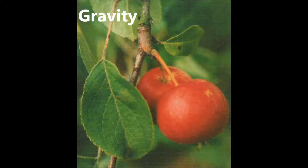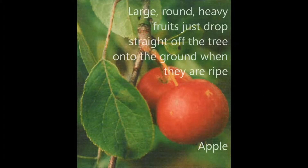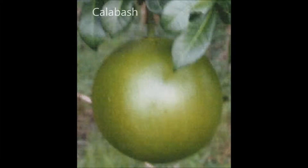Dispersal of Seeds by Gravity. Large or round, heavy fruits just drop straight off the tree onto the ground when they arrive. If they have a tough outer shell, they may roll some distance from the parent plant. The higher the tree they are and the larger they are, the farther they can roll. If they have a soft skin, they may break open when they hit the ground and the individual seeds may be scattered.